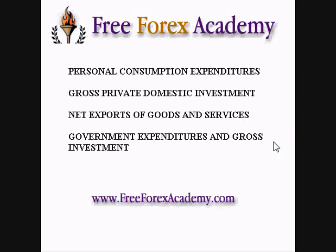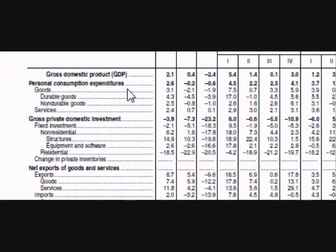Personal consumption expenditures is a fancy name for spending by consumers. It is the total of all spending by consumers in the US for goods and services, and it accounts for about 70% of total GDP. Economists use this section to gauge the level of demand. When people spend more, it creates jobs but could lead to inflation; when people spend less, it could lead to higher unemployment and lower interest rates.